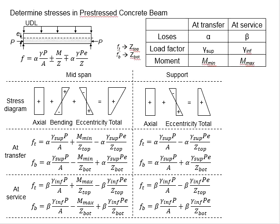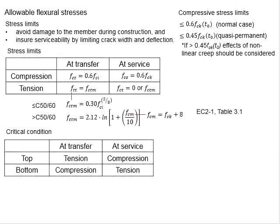In the previous videos, we discussed the derivations of equations to determine stresses in prestressed concrete beams. It is based on the principle of superposition of stress diagrams due to axial compression, bending, and eccentricity. These stresses are checked against stress limits in terms of compression and tension.